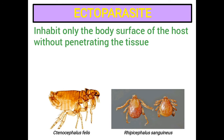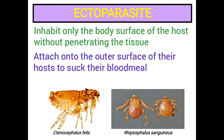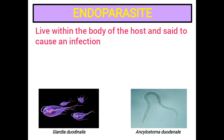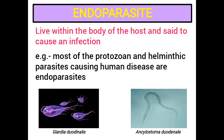Ectoparasites: These are parasites that inhabit only the body surface of the host without penetrating the tissue. These parasites only attach onto the outer surface of their hosts to suck their blood. Examples include lice, ticks, fleas, mosquitoes, etc. Endoparasites: These are parasites that live within the body of the host and are said to cause an infection. Most of the protozoan and helminthic parasites causing human disease are endoparasites.